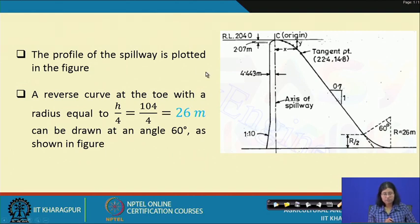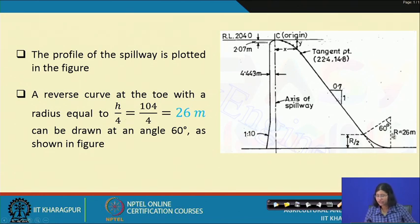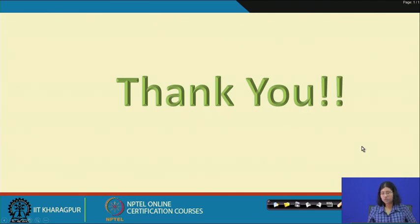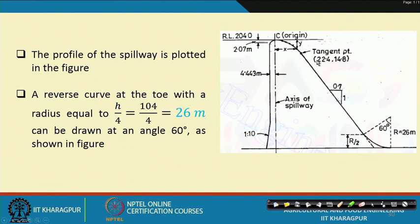The profile of the spillway is plotted in the figure. A reverse curve at the toe with radius r = H/4 = 26 m is drawn at an angle of 60 degrees as shown. The tangent point, axis of the spillway, the 1:10 batter clearance at an angle, and the r = 26 m profile at the end are all located accordingly. In this way, the Ogee spillway is designed, and this lecture ends here.